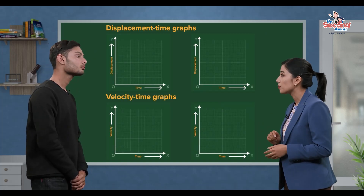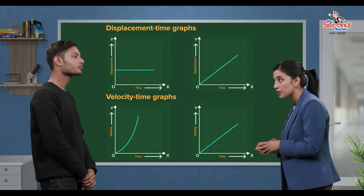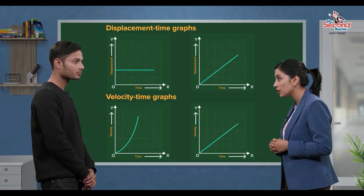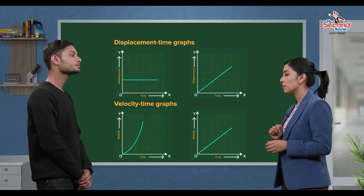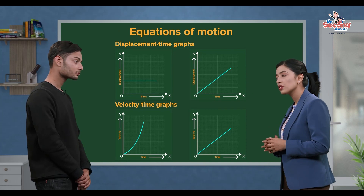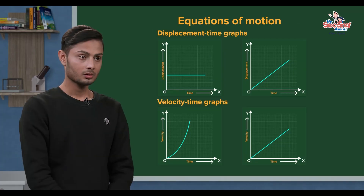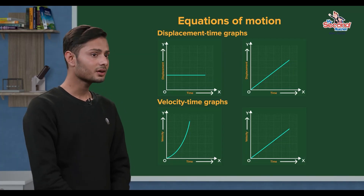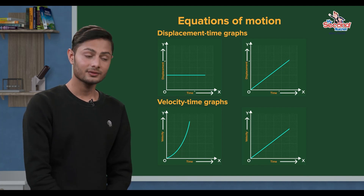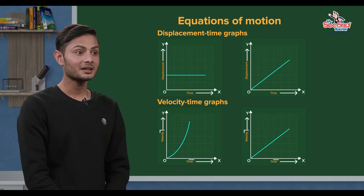In this session, we learned how to represent the motion of an object using graphs. We can use these graphs to derive the equations of motion. In the last session, we discussed the displacement-time graph and the velocity-time graph.